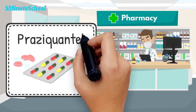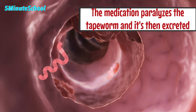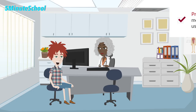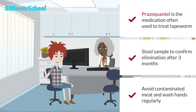Treatment of tapeworm infections is usually with medications. The most common medication used is Praziquantel, which is an anti-parasitic medication. It works by paralyzing the tapeworms attached to the intestines, which then pass through the body during bowel movements. After treatment, a stool sample is usually taken after three months to confirm elimination of the tapeworm and their eggs.